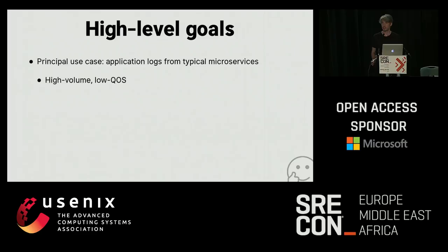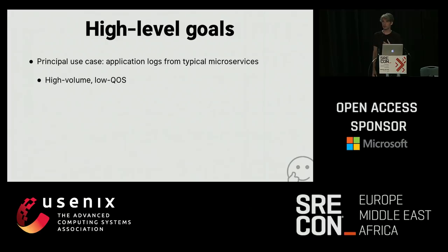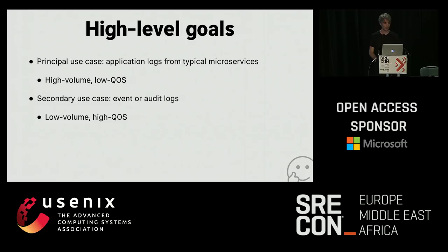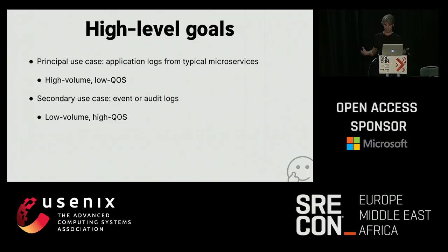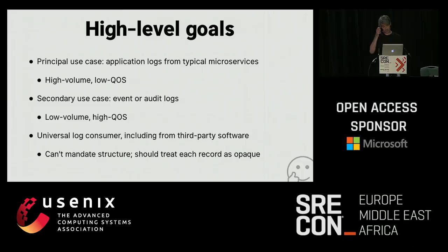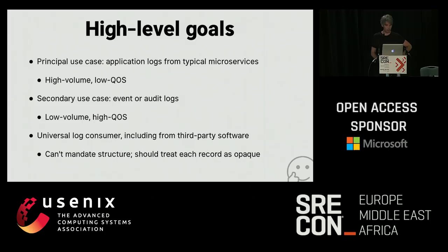The principal use case will be application logs from typical services — debug, info, warn, and error — the stuff we write day-to-day. The property of this data is that it's very high volume but relatively low quality of service, so if we start losing some of it, it's not the end of the world. There's a secondary use case: event or audit logs, where the data needs to be kept at relatively high QoS but is generally much lower volume — for example, transaction information at a fintech company. This thing needs to be a universal log consumer, working not only for software we write but software we're running, which means we can't mandate any particular structure — we need to take arbitrary records and treat them as opaque.